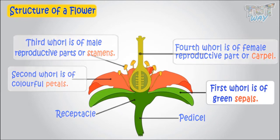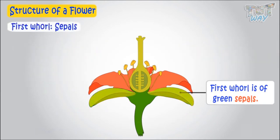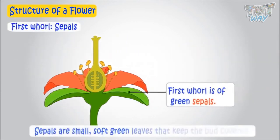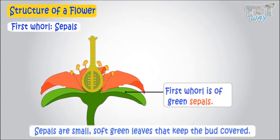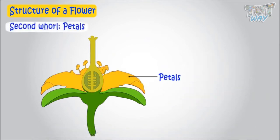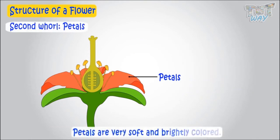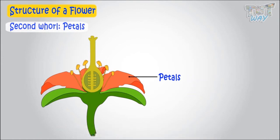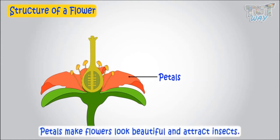The first whorl is of sepals, which are small, soft green leaves that keep the bud covered. When the bud opens, the second whorl — which is the most colorful part of the flower — shows up. Petals are very soft and brightly colored, and they make the flower look beautiful and attract insects.